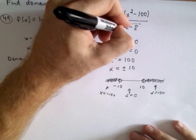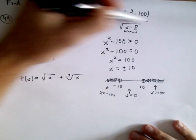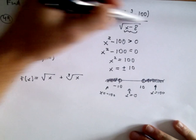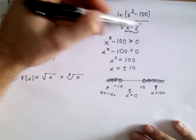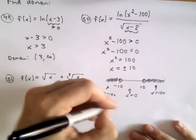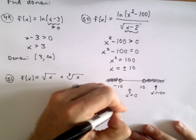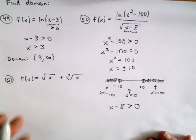So normally we said the stuff underneath a radical has to be greater than or equal to zero. But now since it's in the denominator of my fraction, it has to be, I can't let it equal zero either, because then I would have zero in the denominator of my fraction. So what we need is, we need the quantity x minus eight to be strictly greater than zero in this case.